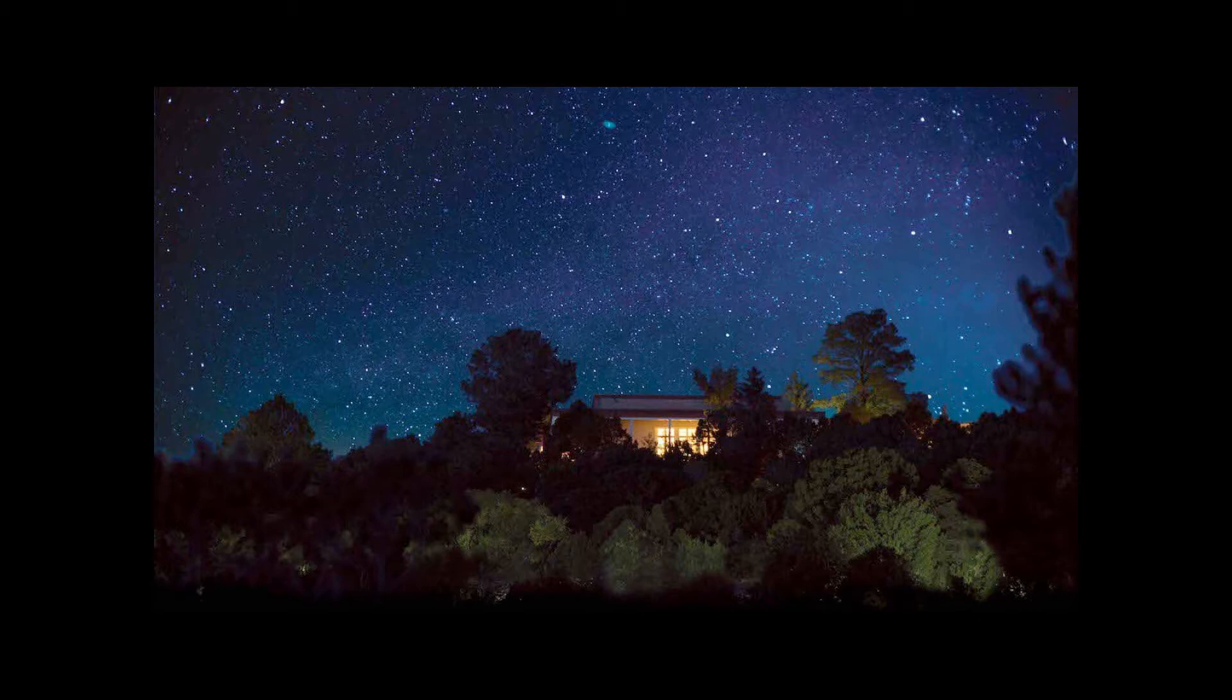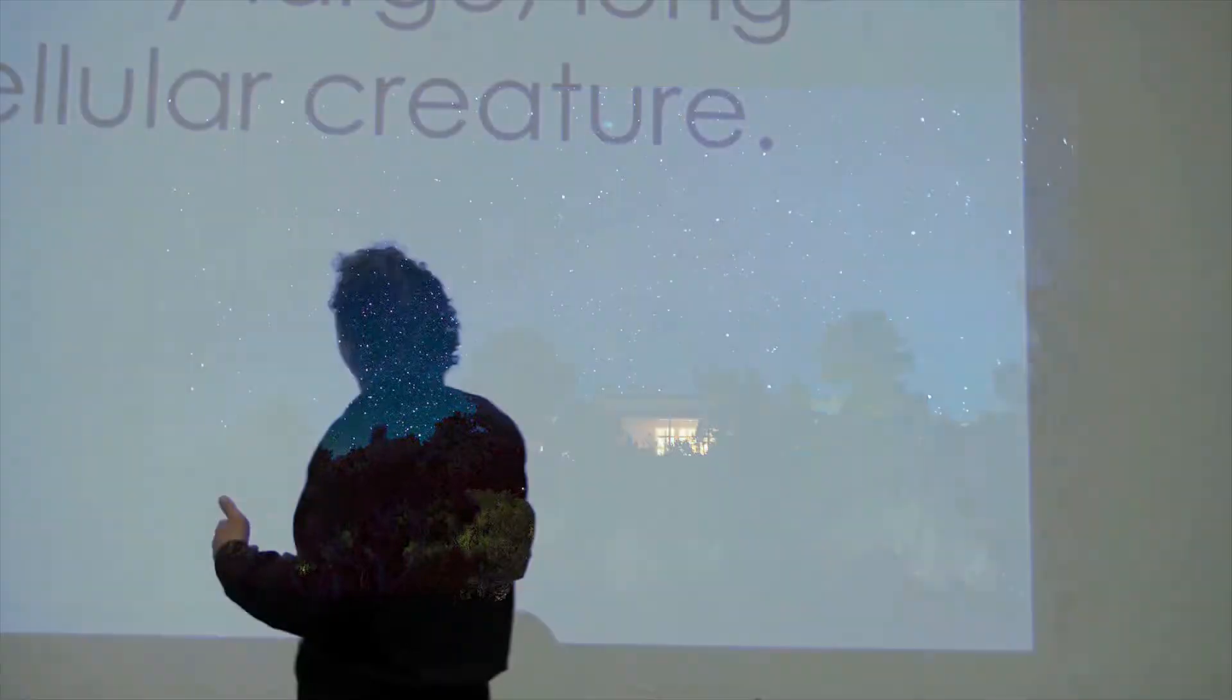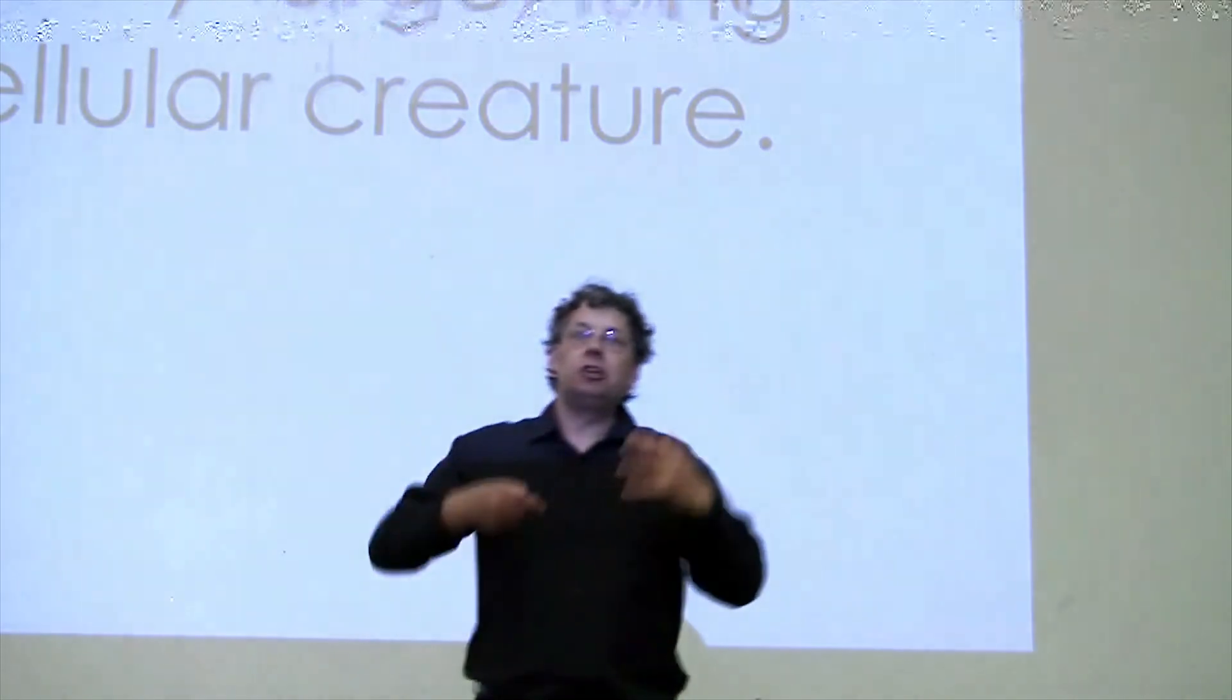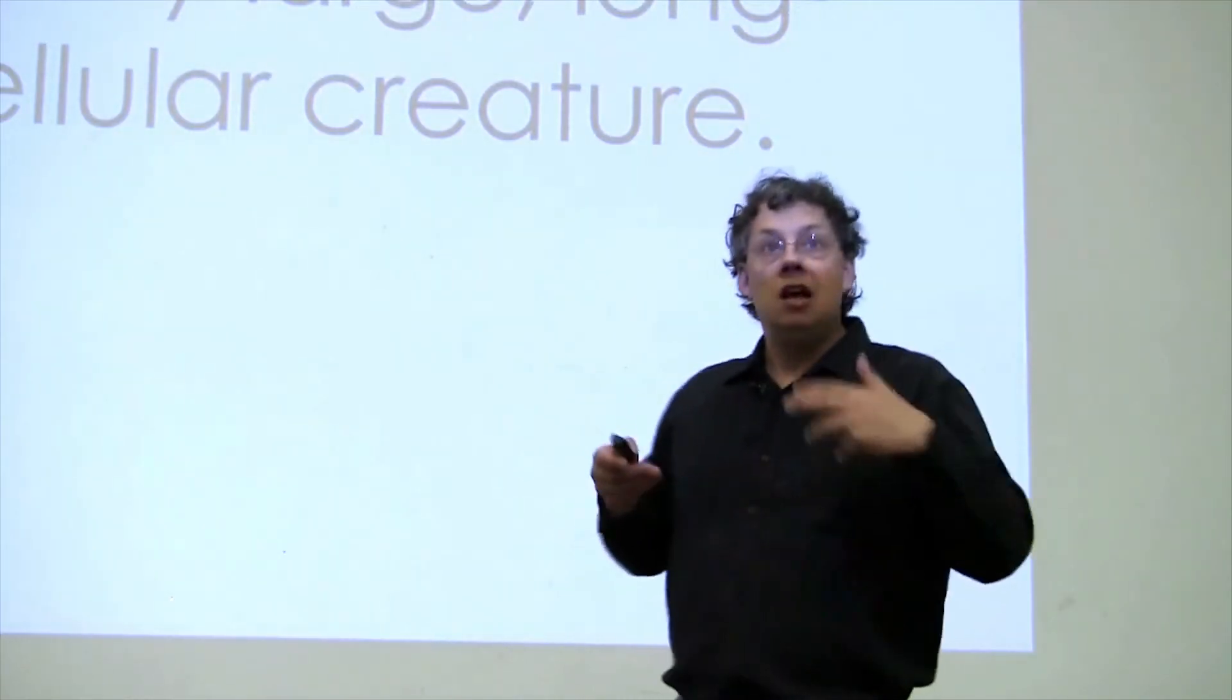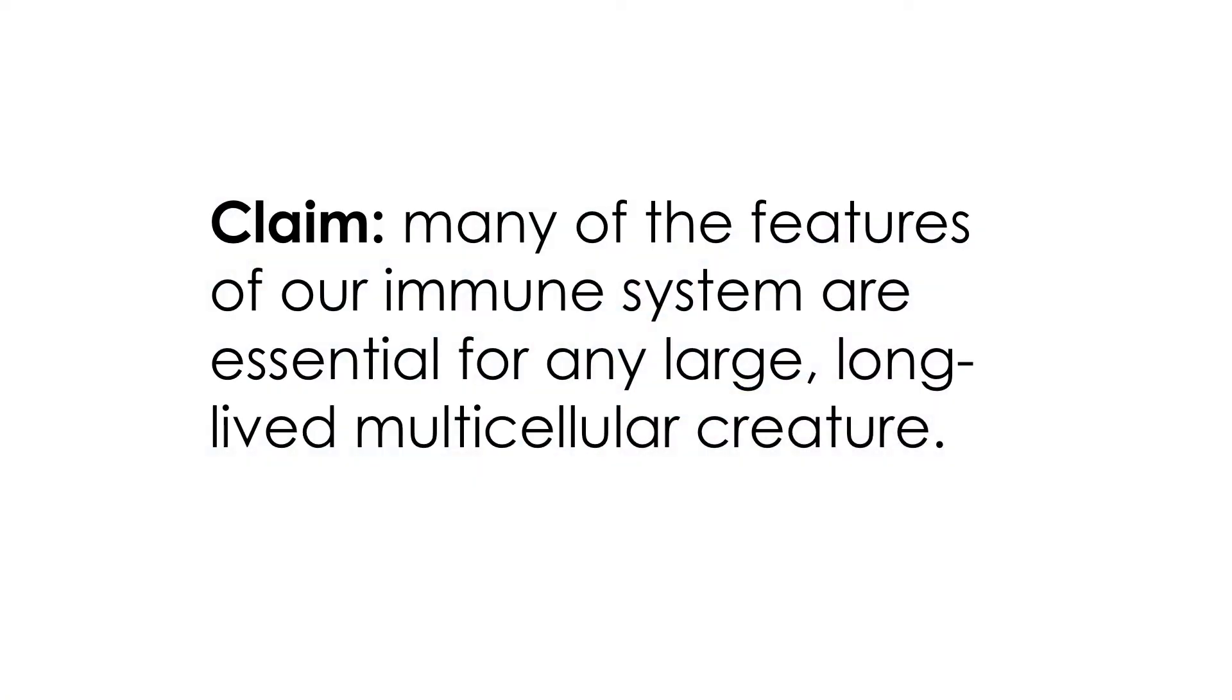There was a workshop where they were talking about physics and complex systems and immune systems. A theoretical physicist had discovered a little bit about immunology, just enough to be dangerous, and made a mathematical model purporting to prove that many of the features of our immune system are essential for any large, long-lived, multicellular creature.